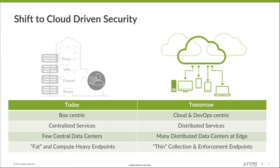You go from having things like Big Iron and a single data center — a big firewall like an SRX 5800 that provides different types of services like proxy, VPN, and IPS — to needing hundreds or thousands of distributed sites. With that kind of distributed edge, there's also now a much larger attack surface.